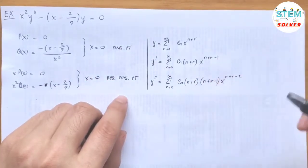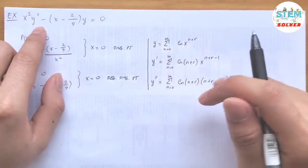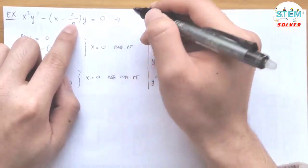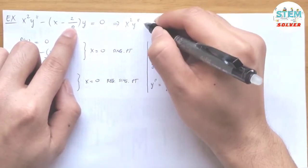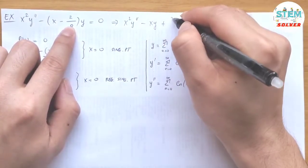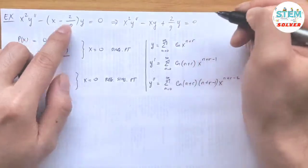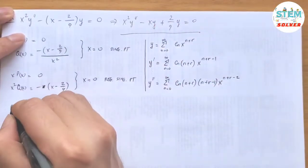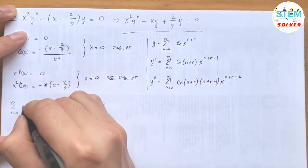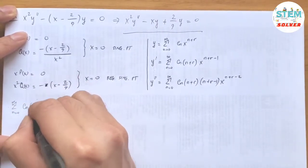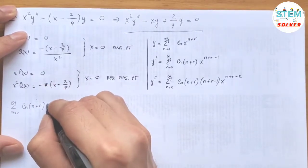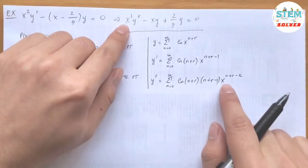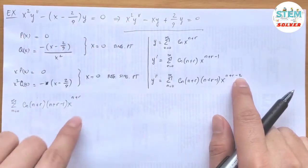Now we substitute these into the differential equation, but first distribute to get: x squared y prime prime minus x y plus 2/9 times y equals 0. Substituting, the first term becomes the series from 0 to infinity of c_n (n plus r)(n plus r minus 1) times x to the n plus r, since x squared times x to the n plus r minus 2 gives x to the n plus r.